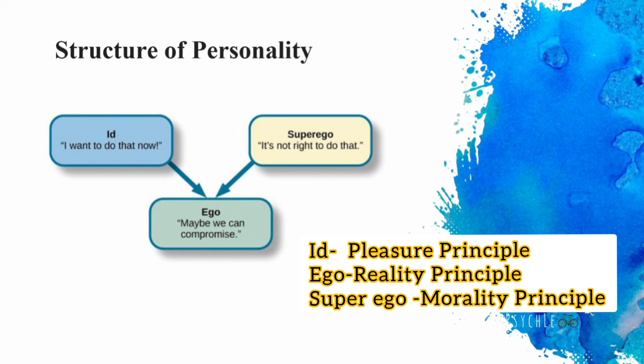The Id is completely pleasure-oriented, while the Superego is completely moral. Of course, these two personality components are often in conflict with each other.